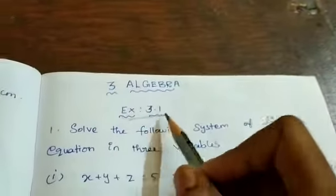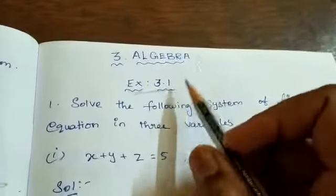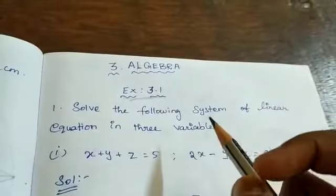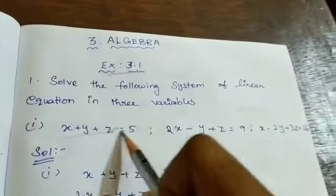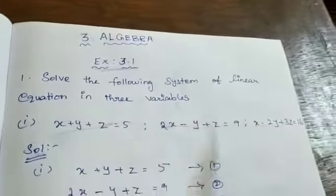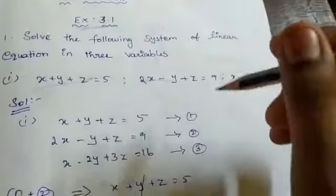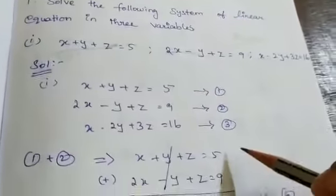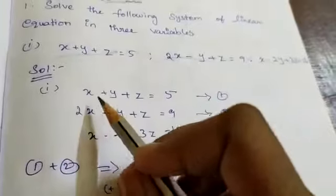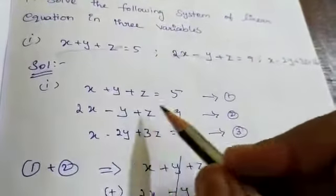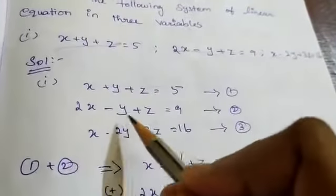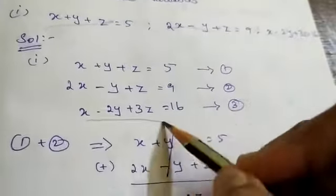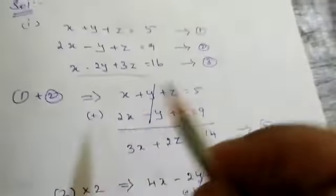Now let us move with Exercise 3.1 in algebra. Solve the following system of linear equations in 3 variables. There are 3 variables given. Now let us solve it. Already we have solved in examples; I will again teach. So x plus y plus z equal to 5 is equation number 1. 2x minus y plus z equal to 9 is equation number 2. And this is equation number 3.